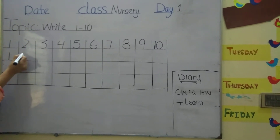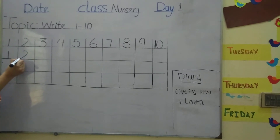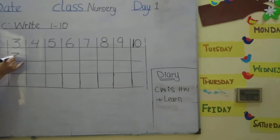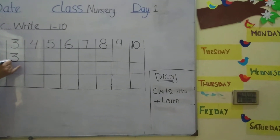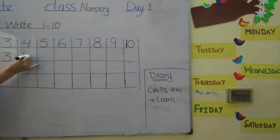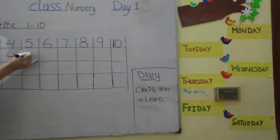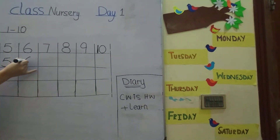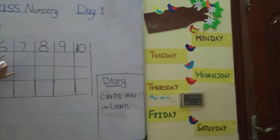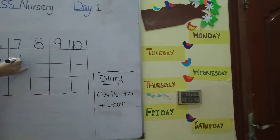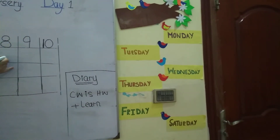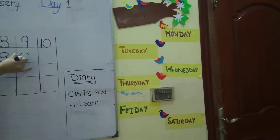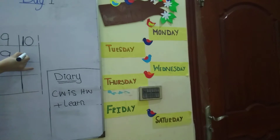This is 2. This is 3. 4. 5. 6. 7. 8. 9. 10.